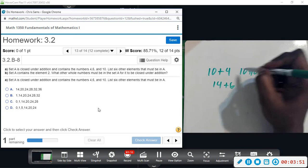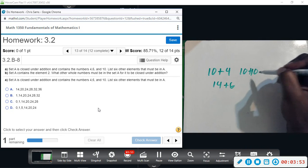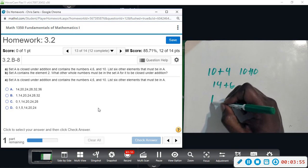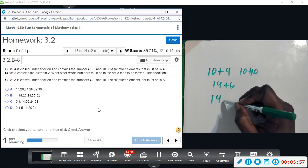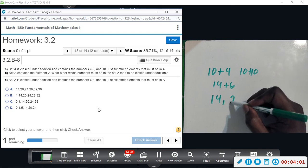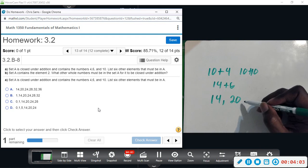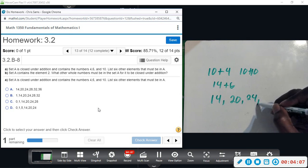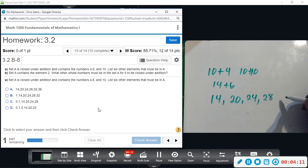So just imagine if we kept adding 4 and 6, that's what I'm trying to see if there's a pattern. We got 14 and then 20, and then 24, and then 28, and then 32, and then 36.